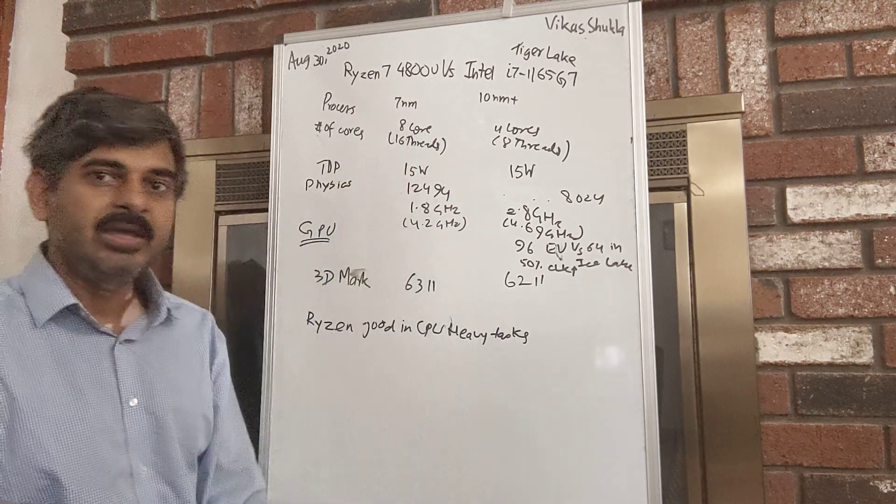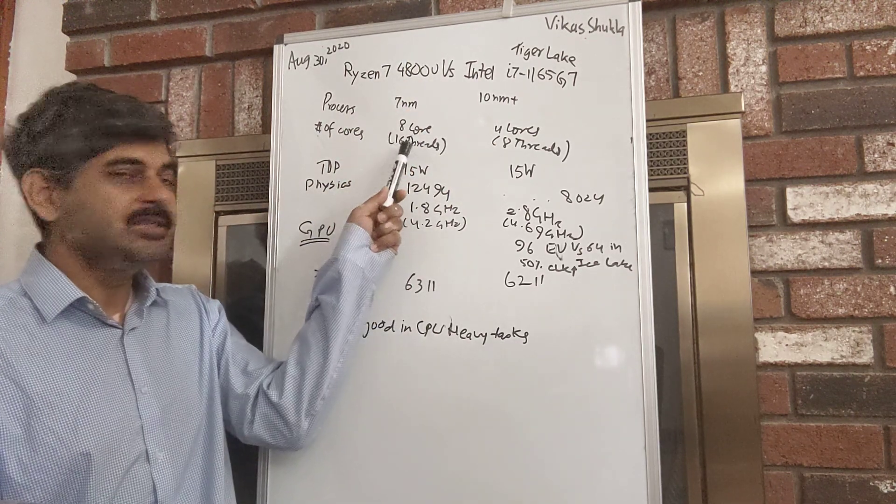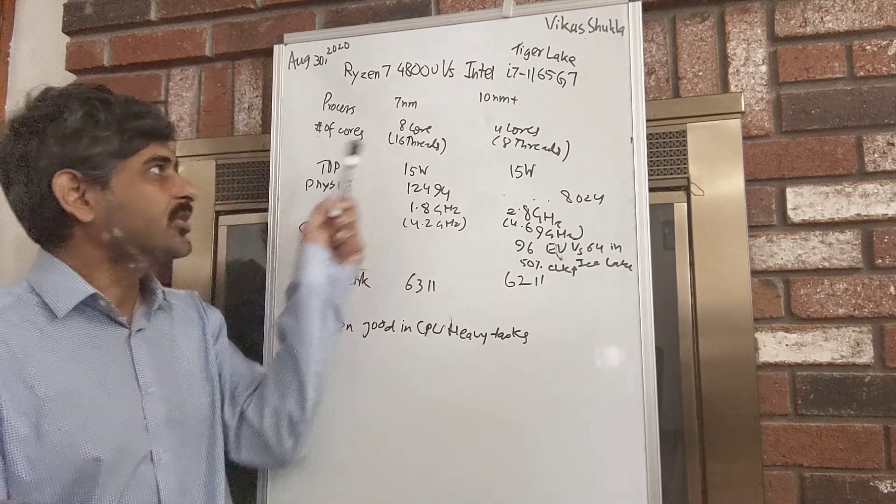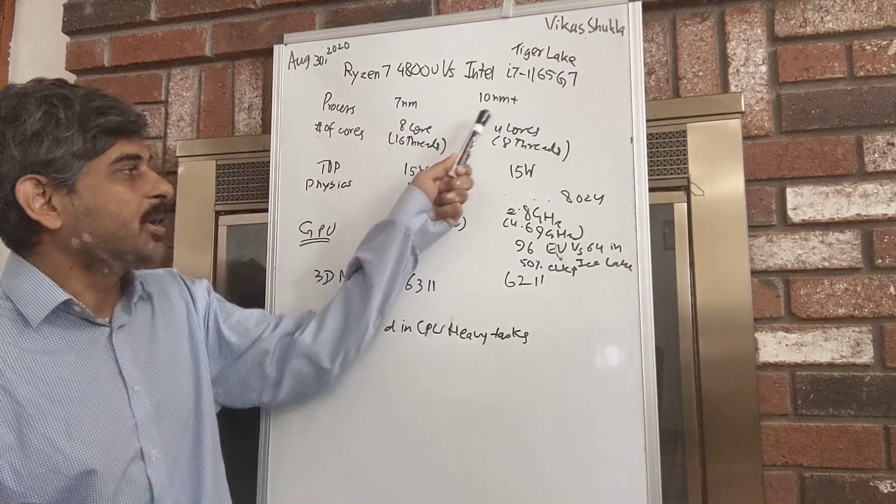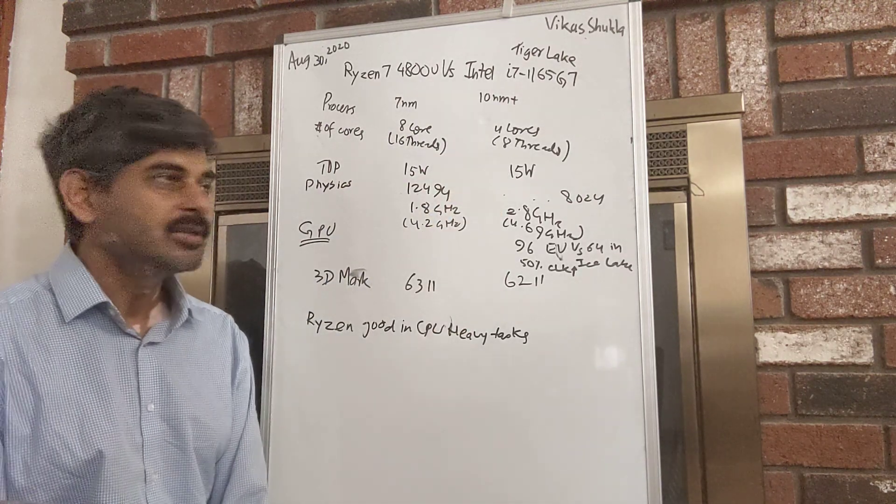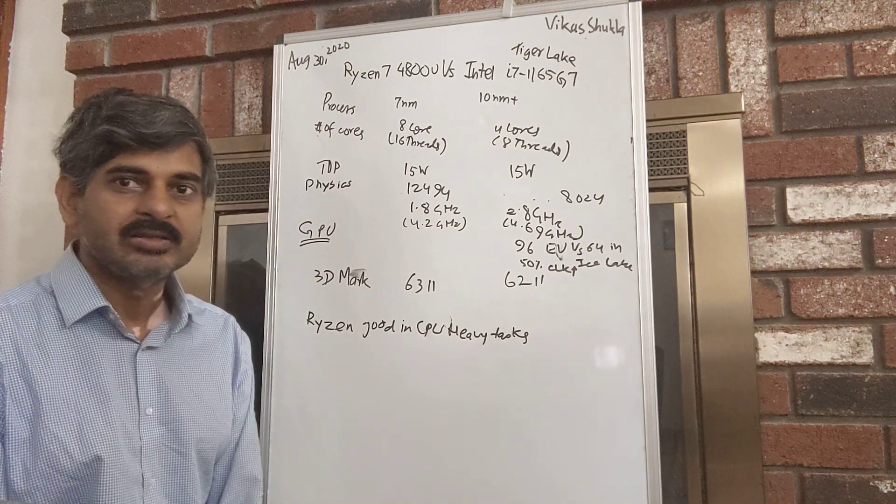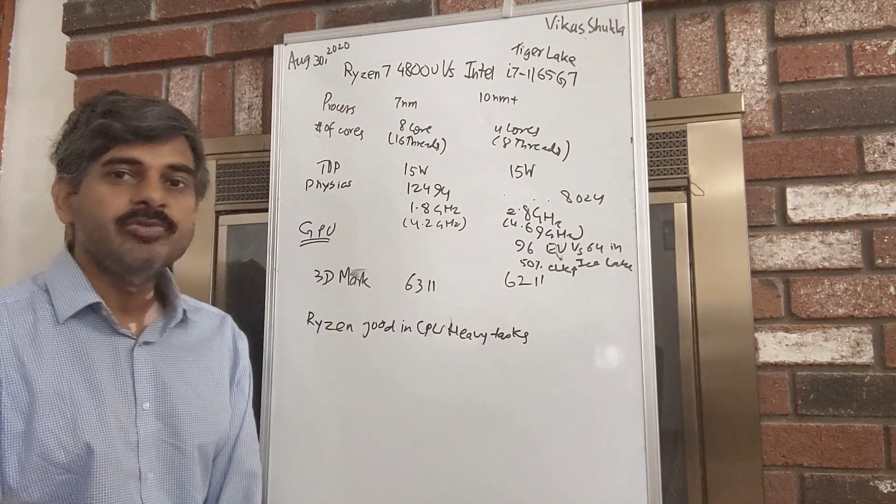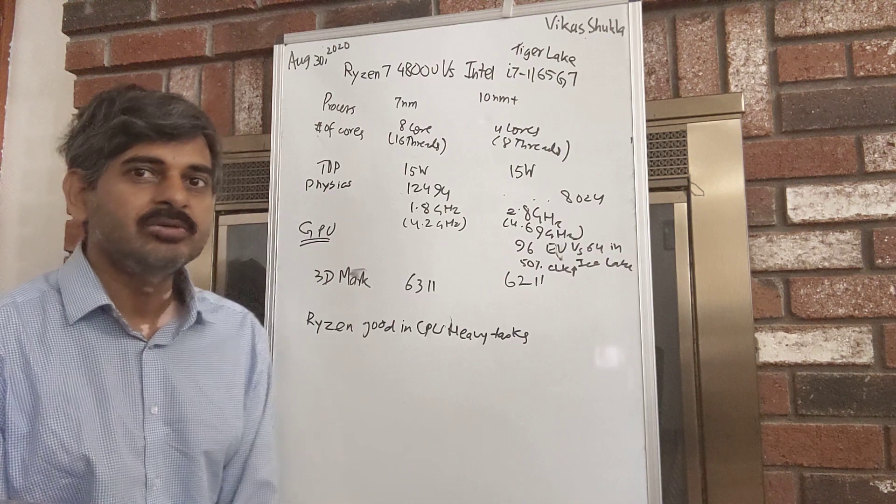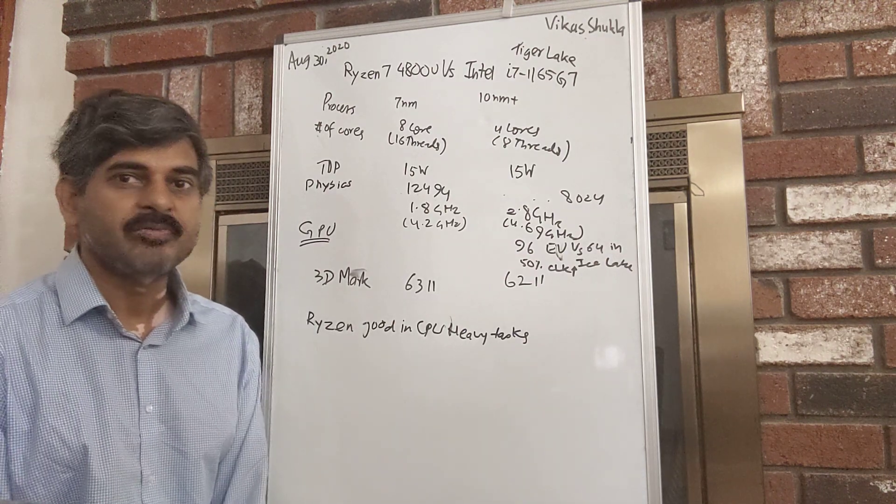The key reason behind this is that AMD's 4800U is able to pack 8 cores and 16 hyper threads in that one single chip compared to 4 cores and 8 threads for Intel's Tiger Lake. Most of this performance difference is going to come from this number of cores.